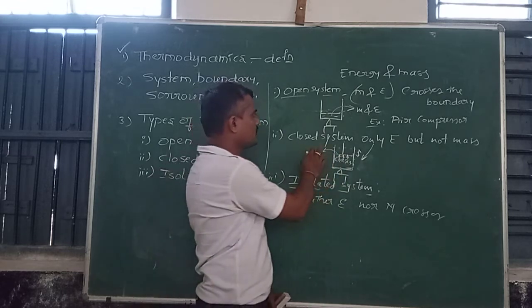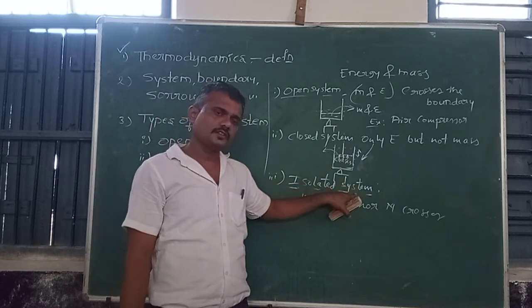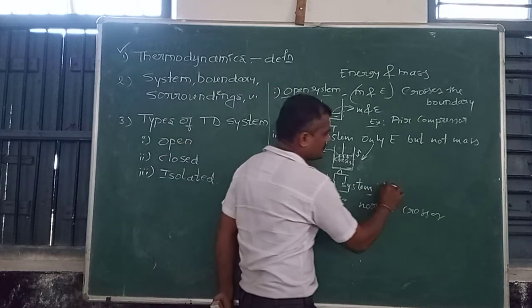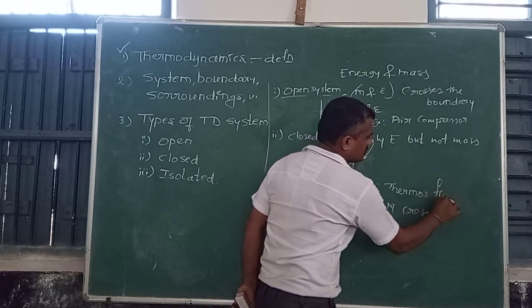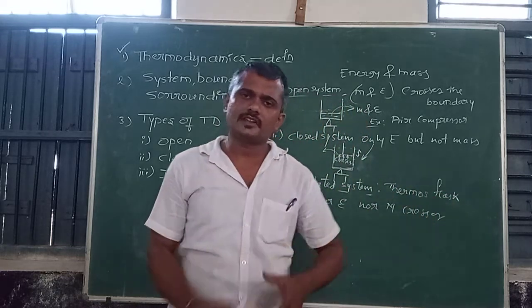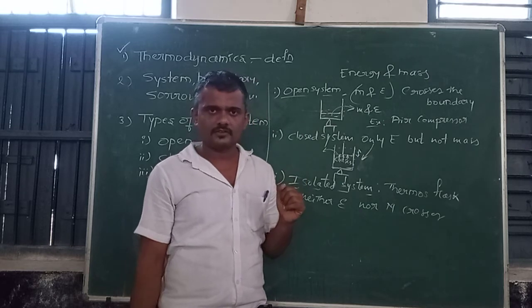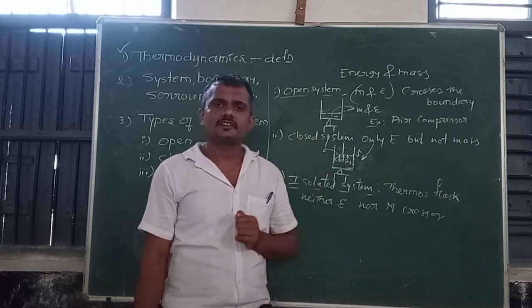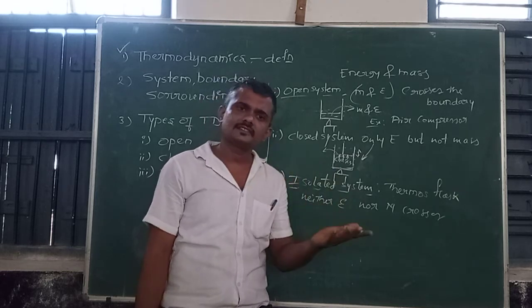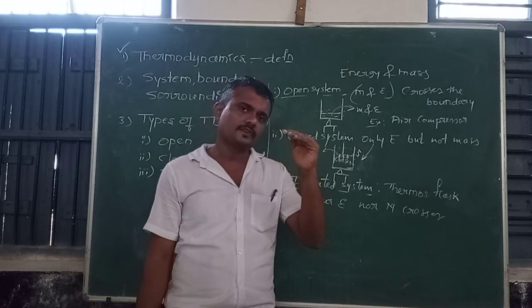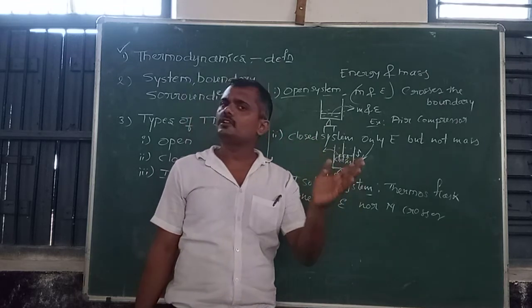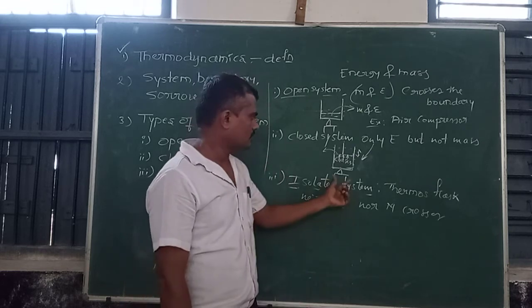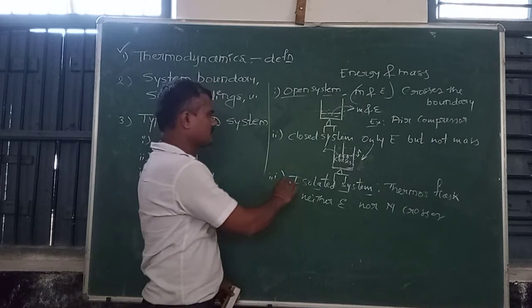The last type is the isolated system. The best example is a thermos flask. You fill a thermos with hot water — about one litre — and close it tightly. Up to some period of time — 8, 12, or 6 hours — the temperature of the water is maintained. Here neither heat energy nor mass is crossing the boundary limit. So this is an isolated system.